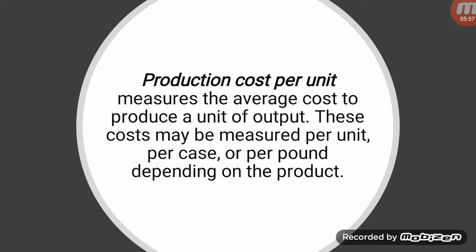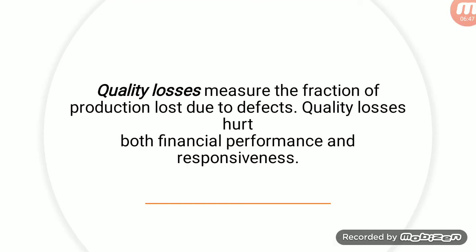Now we will talk about production cost per unit. Here we measure the average cost needed to produce a unit. These costs may be measured per unit, per case, or per pound depending on the product. We measure what cost is incurred to produce one unit. We will use the ABC method — Activity Based Costing — which means whichever activity is more, more cost is incurred, and we calculate it accordingly.